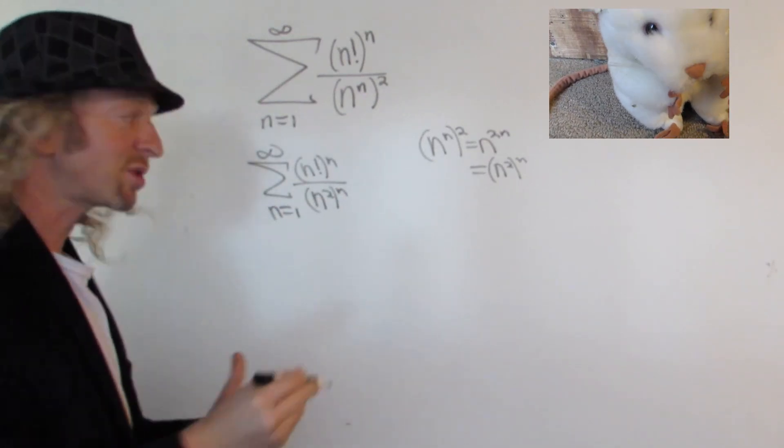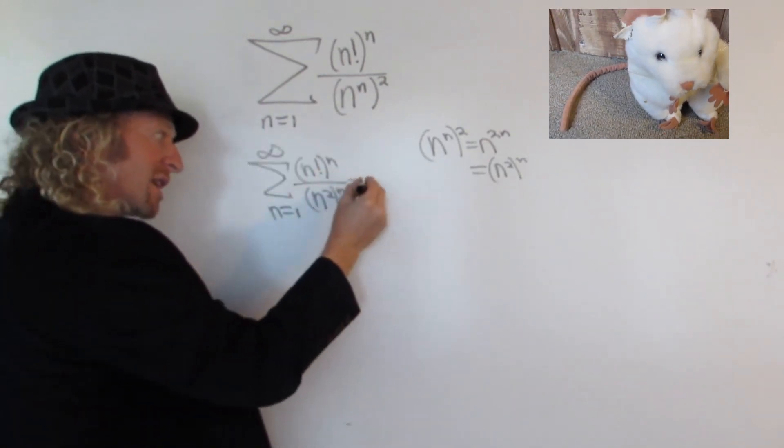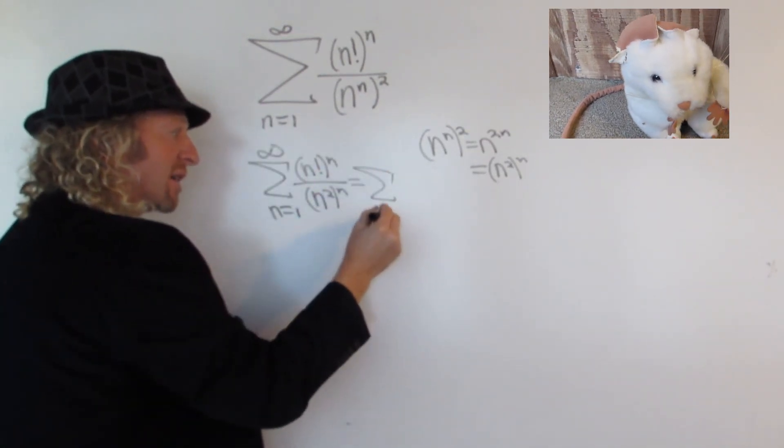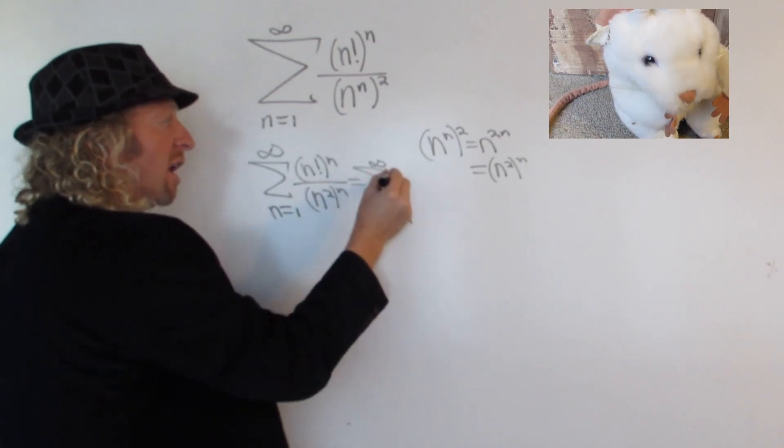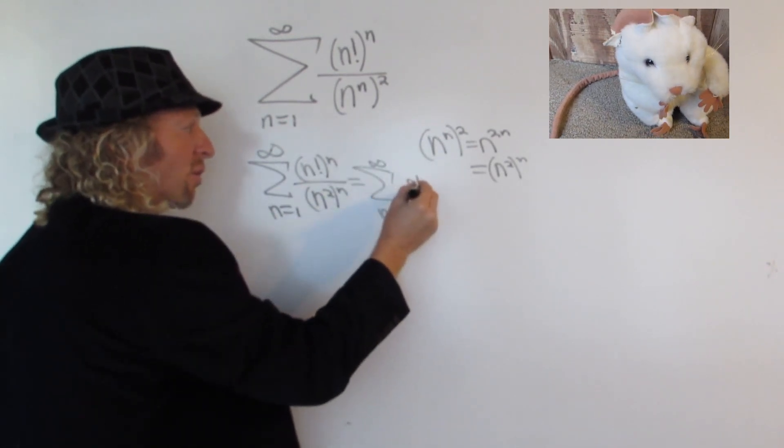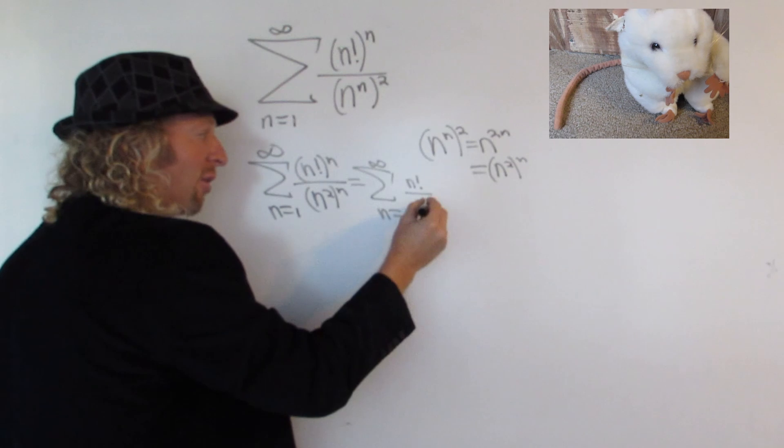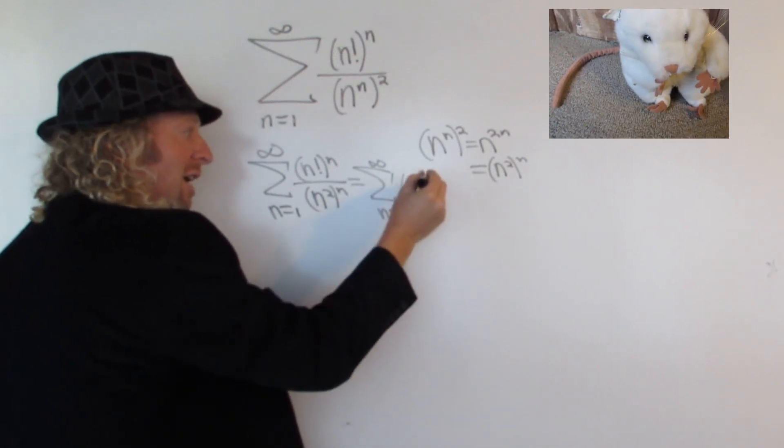Then you can take an extra step and write this as the infinite sum as n runs from 1 to infinity of n factorial over n squared, and the whole thing is to the nth power.